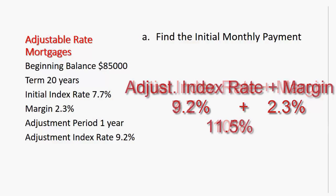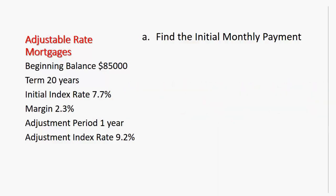After one year, the adjustment index rate is 9.2%, and our interest that we pay is going to go up. Let's start by finding the initial monthly payment. In this example, we're going to use a formula to find the monthly payment, and that formula is R equals capital P times R over 12 over 1 minus 12 over 12 plus R to the 12T.